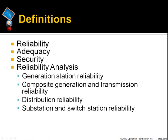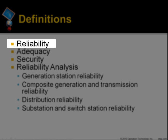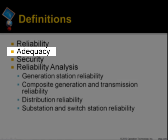We will first give definitions for some frequently used terms related to reliability analysis. Reliability is a probability of a system performing its function adequately for the period of time and operation conditions intended. Adequacy is for a system to have sufficient facilities within the system to satisfy customer demand. Security is the ability of a system to respond to disturbances arising within that system, which is one of the intended operational conditions.